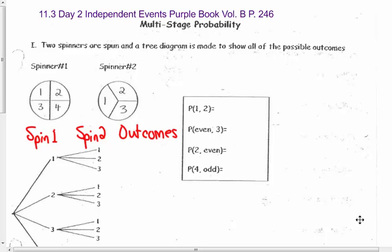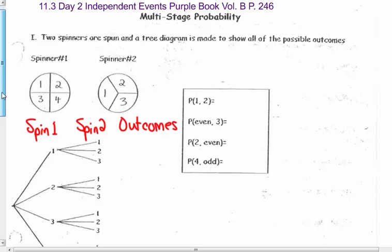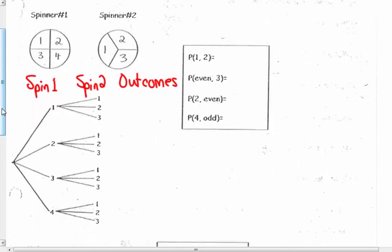Two spinners are spun and a tree diagram is made to show all of the possible outcomes. Spinner one, you can get a one, two, three, or four — so you have four outcomes. Spinner two, you can get a one, a two, or a three — so you have three outcomes on that spinner. Using the counting principle, four times three means I should have a total of 12 outcomes in my list.